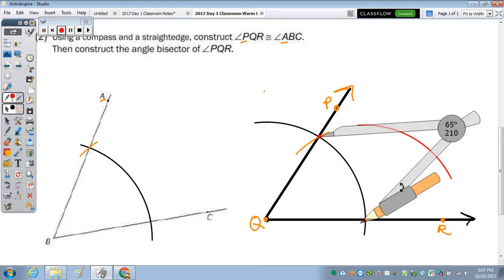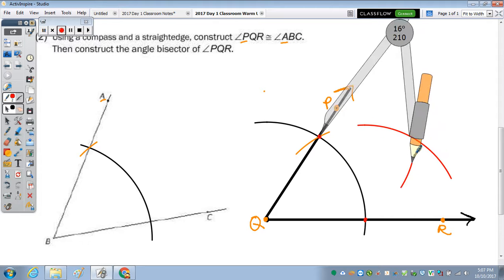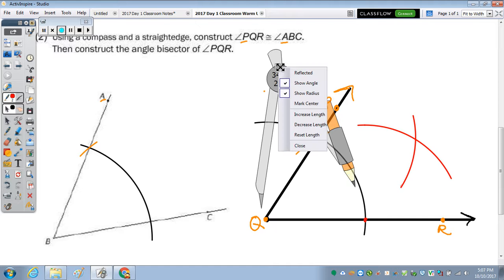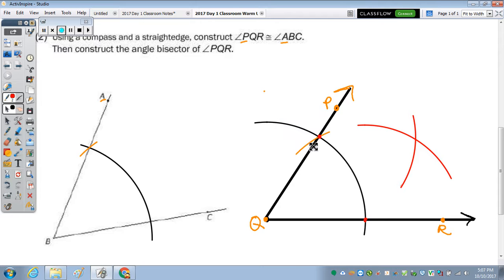And reflect my compass. So I'm going to draw this. So make that arc. And then through that point of intersection, we draw the angle bisector.